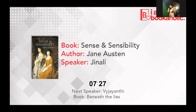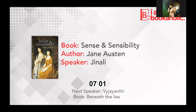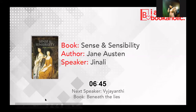A couple of facts about Sense and Sensibility: this was Jane Austen's first published novel, and she wrote the first version of this novel, along with Pride and Prejudice and Northanger Abbey, in the 1790s. Sense and Sensibility was first called Elinor and Marianne, and it was originally an epistolary novel — epistolary novels are compiled through letters exchanged between two characters — but it eventually evolved into the novel we read today.